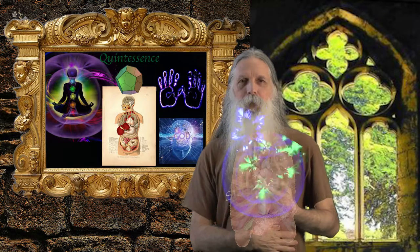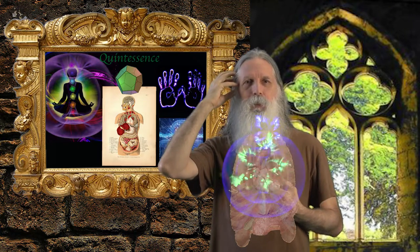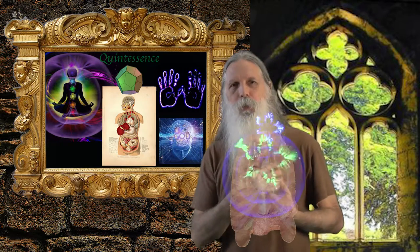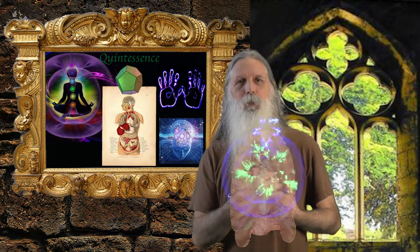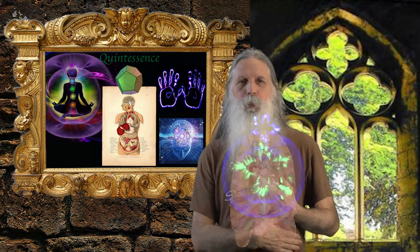We think of thought as happening in the head in Western thinking, and there is certainly a relationship to information processing going on in the brain and nervous system. But there's also a relationship to the digestive system and the earth element seen in the five element system of oriental medicine.